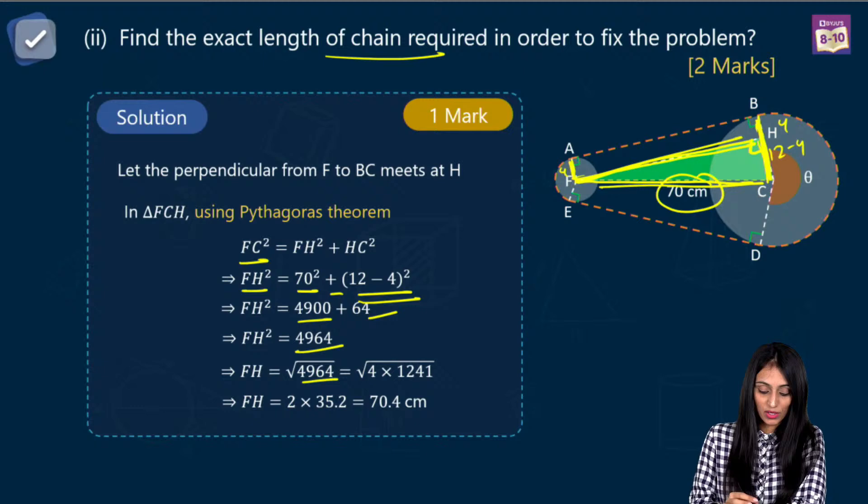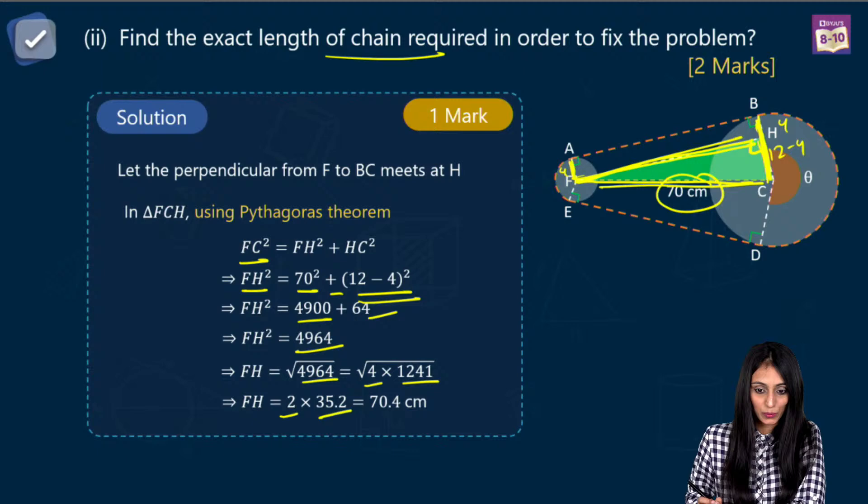We can split 4964 as 4 times 1241. Since the square root of 1241 is 35.2, FH equals 2 times 35.2 equals 70.4 centimeters.